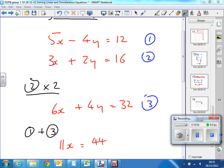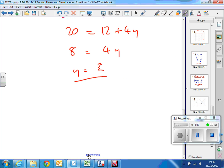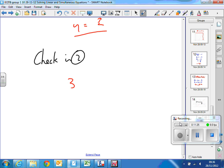To check the values are right, put them back into the second of the original equations, the one we didn't use. Substitute your values for x and y and see if you get 16. Check in equation 2: 3x plus 2y equals 16. So 3 times 4 plus 2 times 2 should equal 16, which it does. So I know that I'm right.